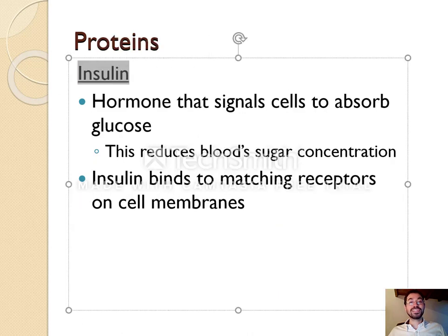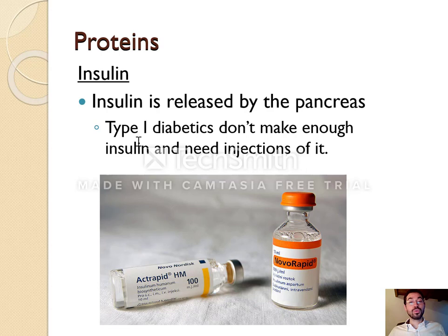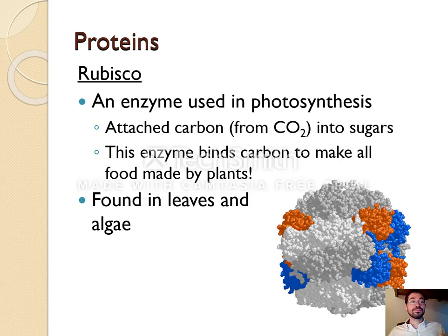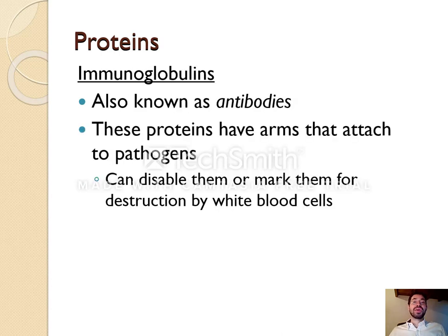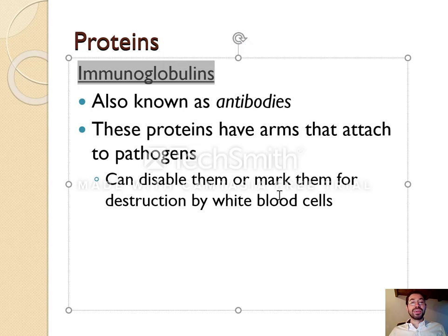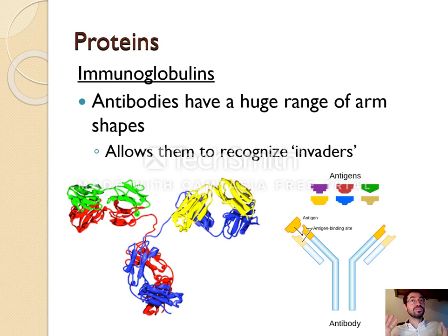Next we have insulin. Insulin is a hormone that tells your body when to absorb glucose. If you don't produce enough insulin, you are a type 1 diabetic, so you need injections of it instead. So insulin is a hormone — rubisco was an enzyme, insulin is a hormone. Next, antibodies. Antibodies are also known as immunoglobulins. They have these arms that can help them attach to pathogens like viruses and bacteria, showing another function of proteins as part of your immune system.